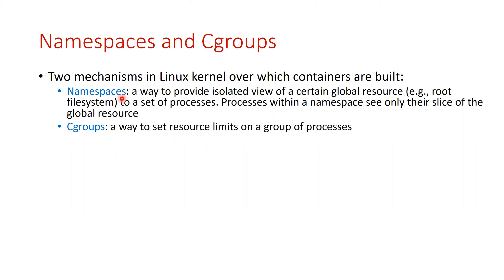A namespace is a way in which you can provide a sliced or isolated view of a certain global resource. For example, normally if you do PS, you see all the processes in the system. But if you take some processes and put them in a separate namespace, the processes will only see each other — they will only see their slice of this process namespace. Similarly, whether it is networking, port numbers, usernames, there are several things you can slice. If you put processes in a separate namespace, they will only see their slice of the global resource.